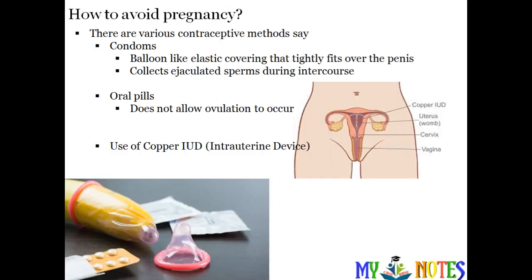The next topic is how to avoid pregnancy. There are various methods to avoid pregnancy, and these methods are also known as contraceptive methods. There are many contraceptive methods — for example, condoms.